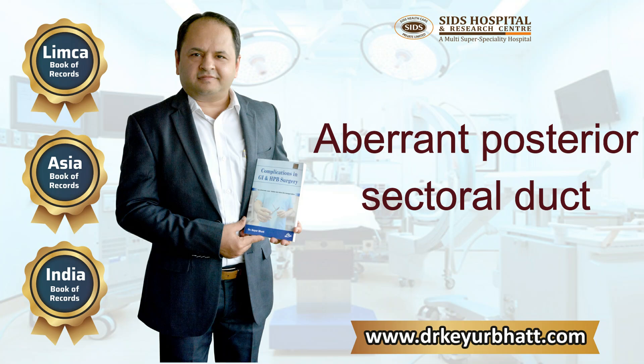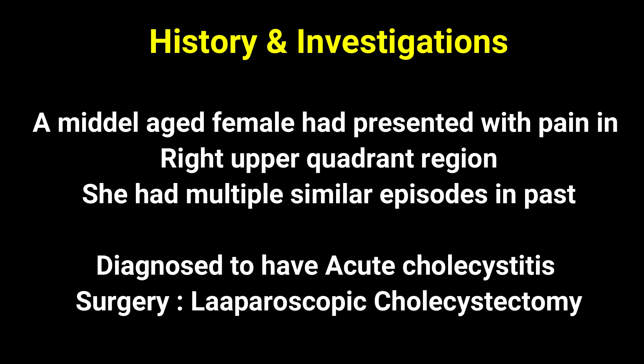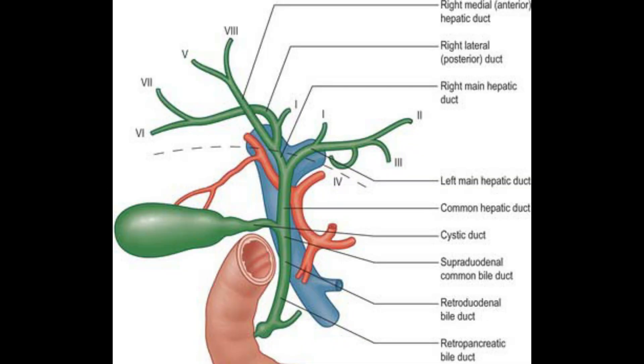Aberrant right posterior sectoral duct in a cholecystectomy. A middle-aged female presented with a history of pain in the right upper quadrant region. She had multiple similar episodes, was diagnosed with acute cholecystitis, and was taken up for laparoscopic cholecystectomy.